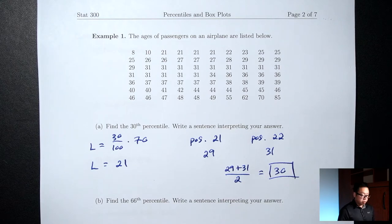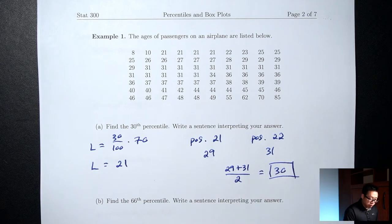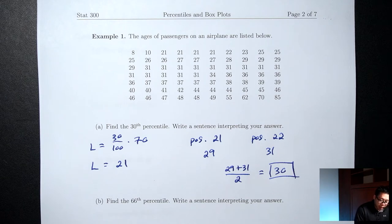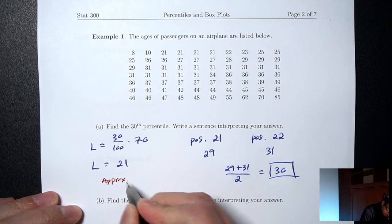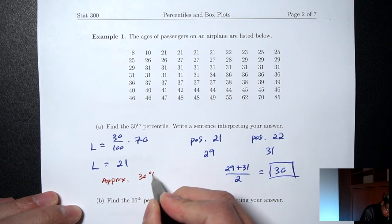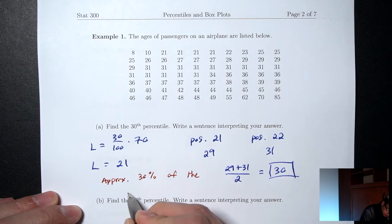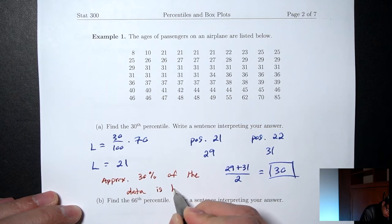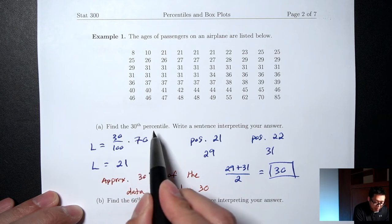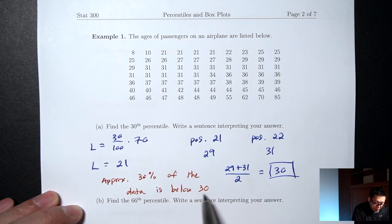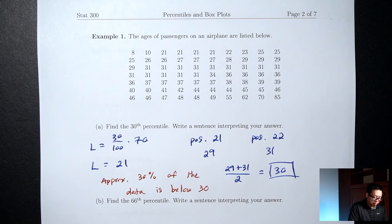Write a sentence interpreting your answer. Percentiles tell you what percent is below the data value. So the interpretation is: approximately 30% of the data is below 30. The 30% came from the 30th percentile, and the value 30 came from our result — it's just a coincidence that they're equal.